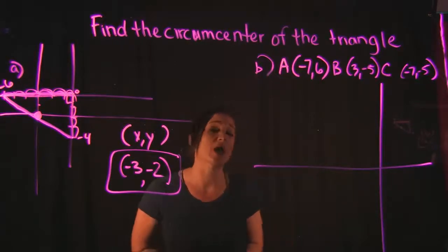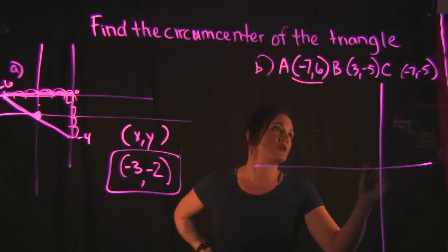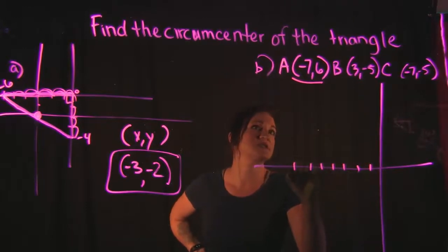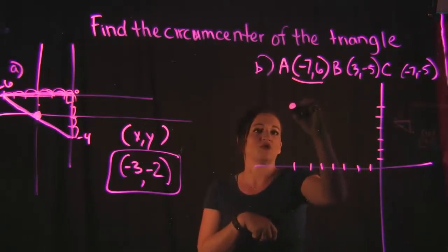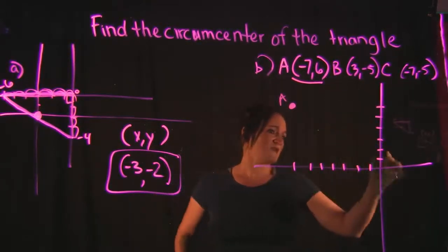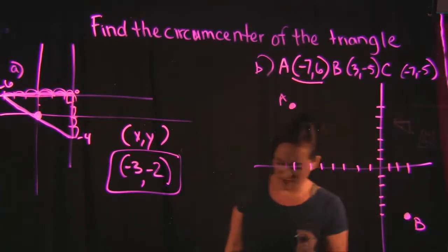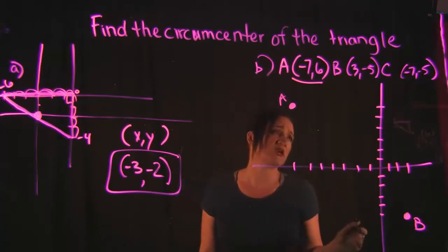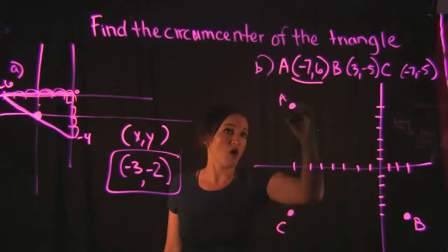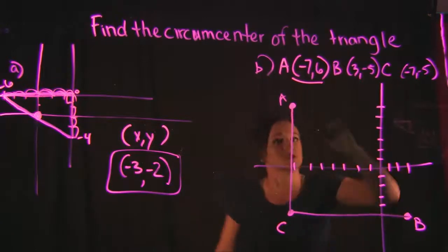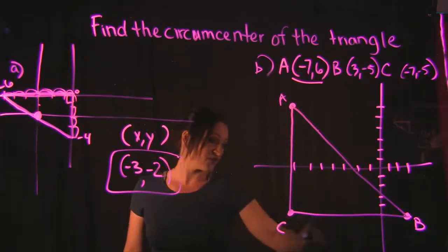For Example B, they gave us three points which are the three vertices of the triangle, but no drawing. So we need to plot them. Point A is (-7, 6): go left seven, up six — right here. Point B is (3, -5): go right three, down five — there's B. Point C is (-7, -5): go left seven, down five — right here. Connect the dots and draw your triangle.